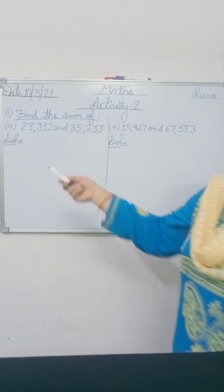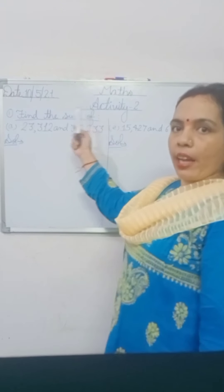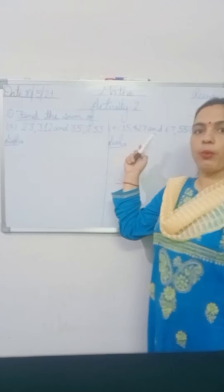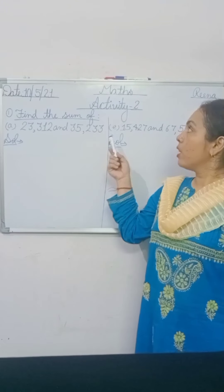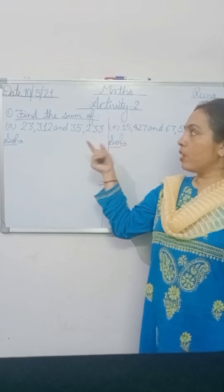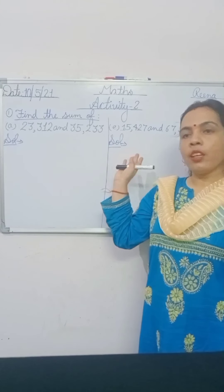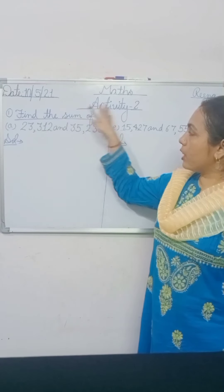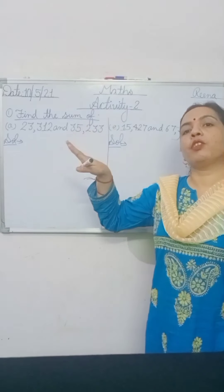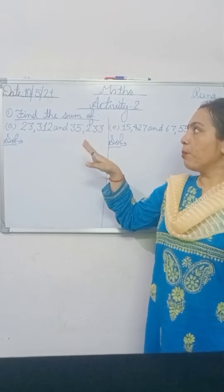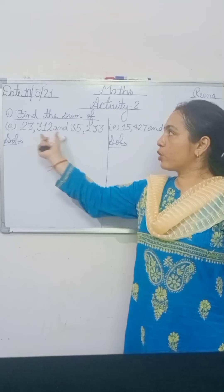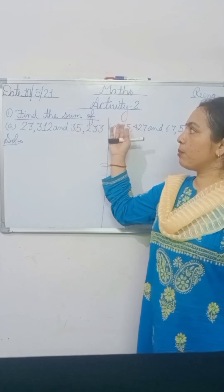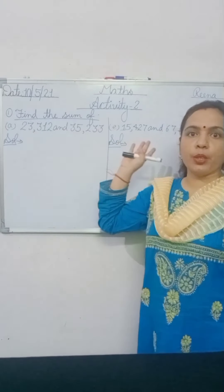Question number 1 is find the sum of. I have selected only 2 questions because in your previous activity, you have already solved activity number 1, that is addition. Now activity number 2 is same as activity number 1, but in activity number 1 you were given only 4-digit numbers. In activity number 2, you are given 5-digit numbers.